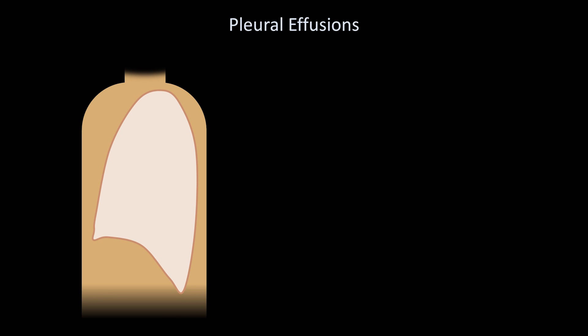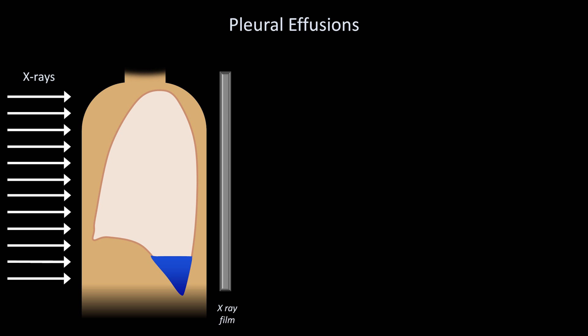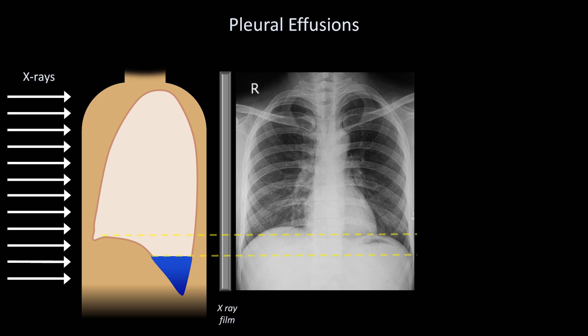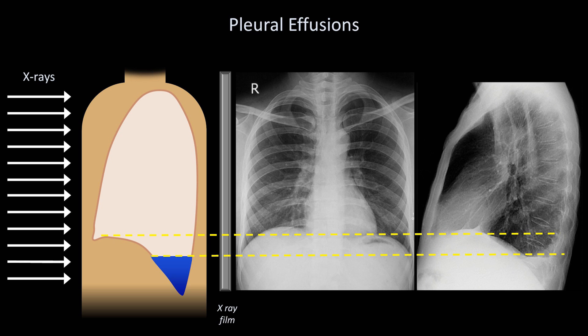An interesting phenomenon occurs when effusions develop that is a consequence of the curved geometry of the diaphragm. Imagine a side view of a patient with a relatively small effusion in the gravity-dependent posterior costophrenic sulcus. On a PA film, since the top of the effusion is still below the superior-most aspect of the diaphragm, it will not be visible. However, on the lateral film, you'll be able to see it as a blunting of the posterior costophrenic angle. The general rule is that small effusions will be visible first on the lateral film before they become visible on the PA film. In fact, it can take several hundred cc's of pleural fluid to accumulate before it can be seen on the PA.